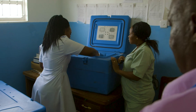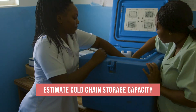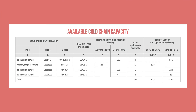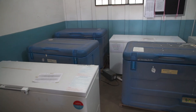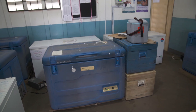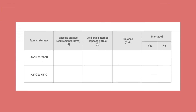Once you know your vaccine storage requirements, you will then estimate your cold chain storage capacity to determine if you have sufficient space. To do that, you can use a table like this one. You would calculate the total net vaccine storage capacity for each type of equipment, such as every model of refrigerator or freezer available, then add the capacities together to get the total net vaccine storage capacity for each temperature range. This calculation is covered in more detail in a separate video.